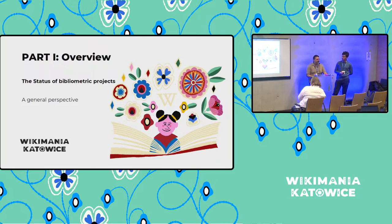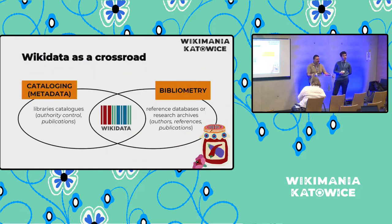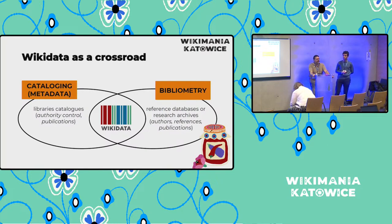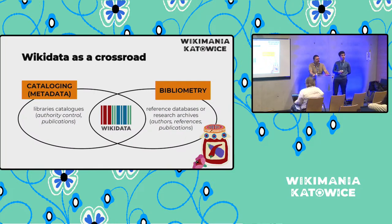The first slide is an overview for those without general background on the situation. We are talking about authors — you may have heard about the WikiCite project, which is about scholarly articles. In this case, the entire project mainly focuses on authors. Author items sit at the crossroads of two areas: general bibliometry and authority control in national libraries, including the VIAF ecosystem and related identifiers.